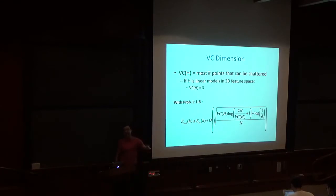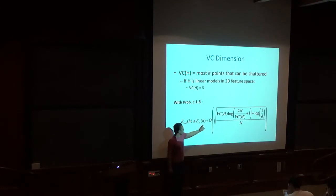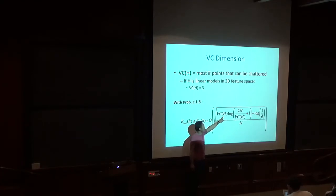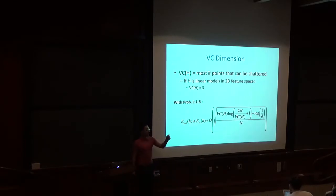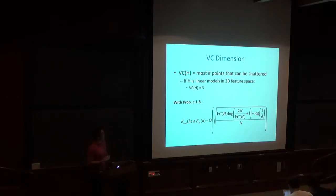The bias-variance tradeoff, as we covered it in class, is an intuitive notion of the complexity of the function class versus how much training data we have. When we do model selection to optimize the bias-variance tradeoff, we're choosing a function class that optimizes this bound. Lower bias models have lower training error but higher VC dimension and thus higher variance. This is just one way to formally write down a mathematically rigorous bound characterizing that tradeoff, though the bound might be loose.